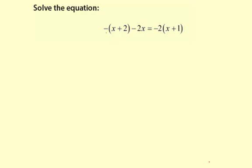So let's take a look. First we're going to make the two functions. This left side I will call f of x equals negative parentheses x plus 2 and then minus 2x. Then g of x is going to be the right side of the equation or negative 2 times x plus 1 in parentheses.